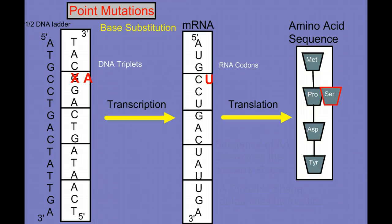Well, let's look at a different base substitution. What if we substitute this A, and instead of that A, we have a G? Well, that changes this codon from CCU to CCC.